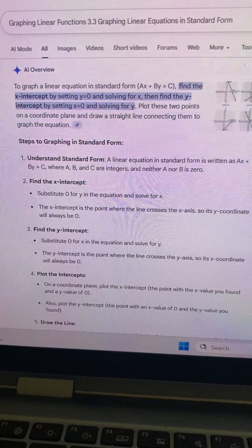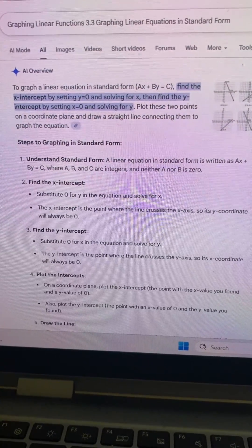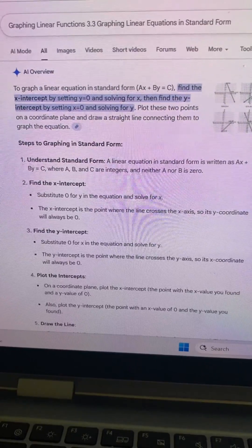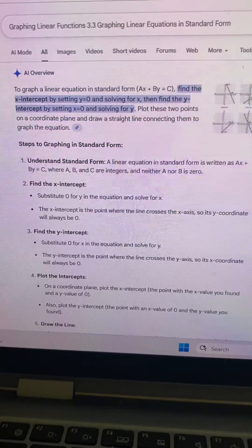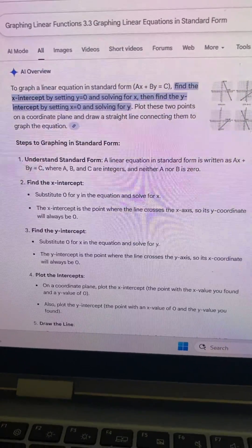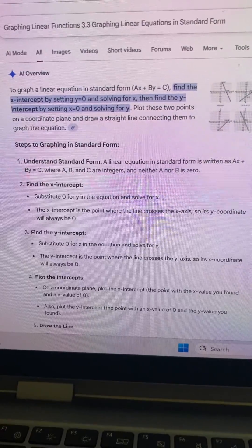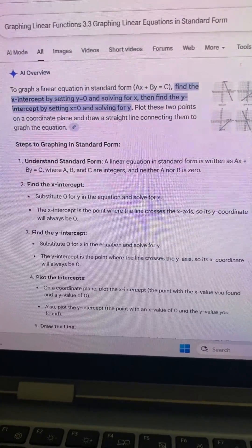Steps to graphing standard form. Number 1: Understand standard form. A linear equation in standard form is written as Ax + By = C, where A, B, and C are integers, and neither A nor B is zero.